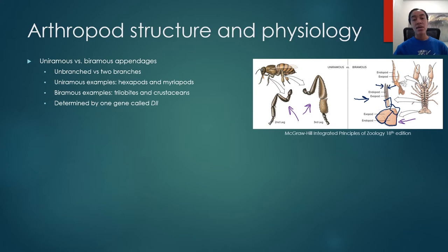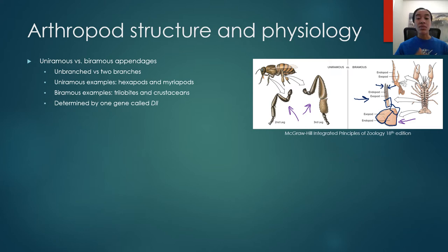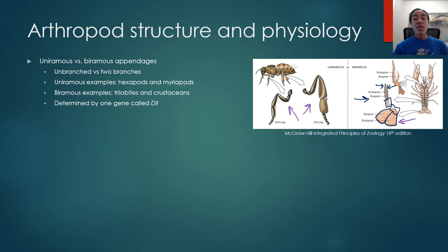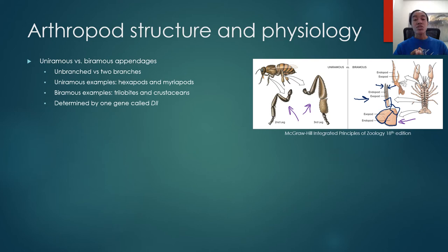Examples of uniramous arthropods include hexapods - all insects, hexapod meaning six legs - and myriapods including centipedes and millipedes. Examples of biramous appendages are found in lobsters and other crustaceans like shrimp and krill, and also in trilobites. The gene responsible for determining whether an arthropod will have uniramous or biramous appendages is called DLL, an early developmental Hox gene. Researchers have been able to manipulate this gene to make an arthropod that is normally uniramous become biramous and vice versa.